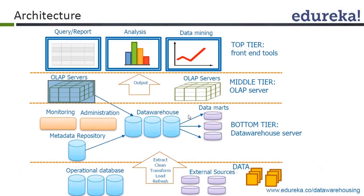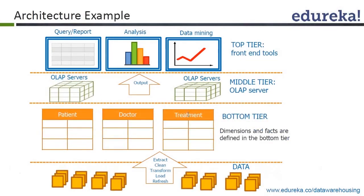The first is the bottom tier. The example shown here illustrates that the bottom tier contains the facts and dimension tables we just discussed — the hospital example with patient, doctor, and treatment. So the bottom tier is our physical data warehouse tier where we create our fact and dimension tables.